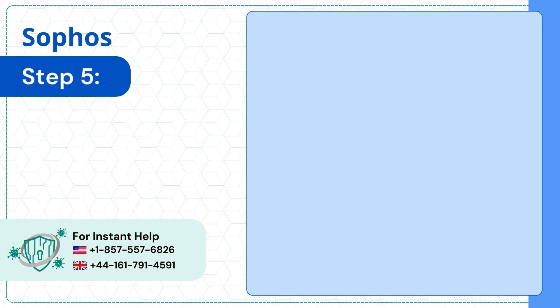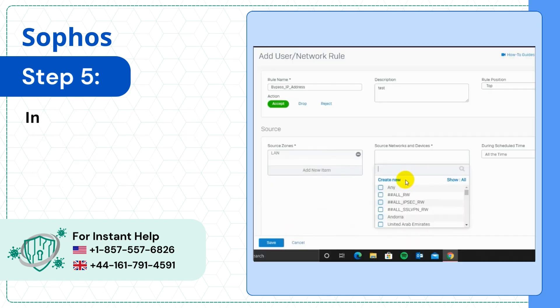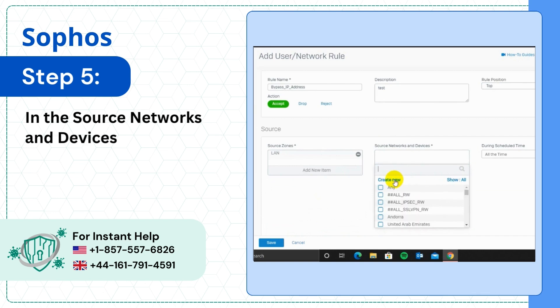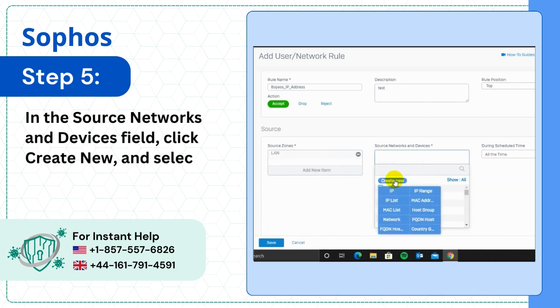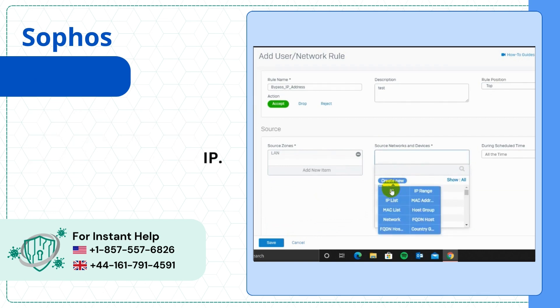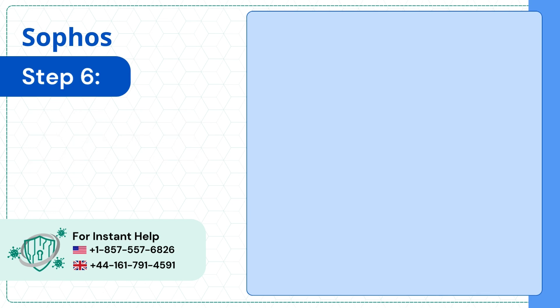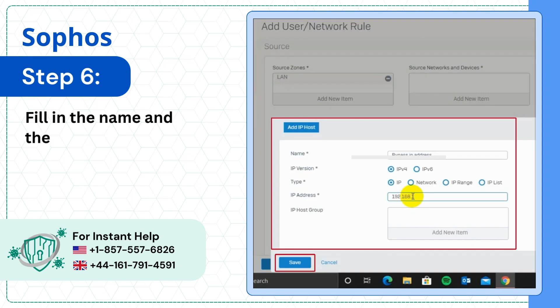Step 5: In the Source Networks and Devices field, click Create New and select IP. Step 6: Fill in the name and the IP address field, then click Save.